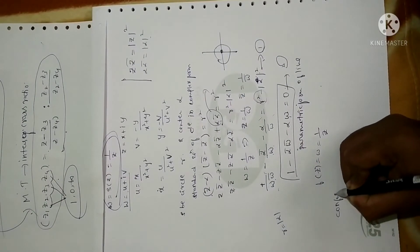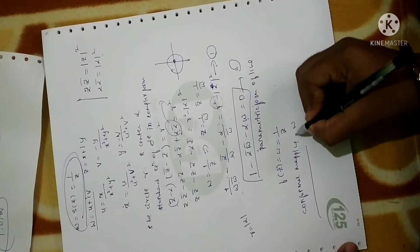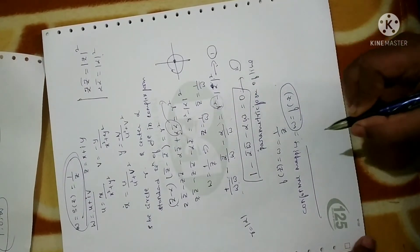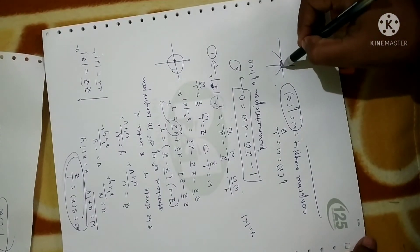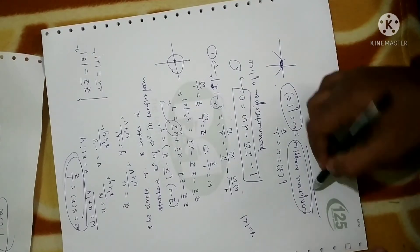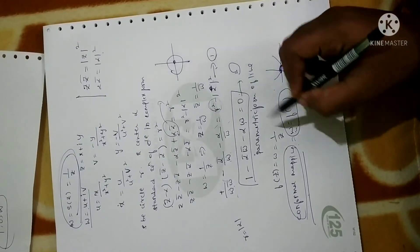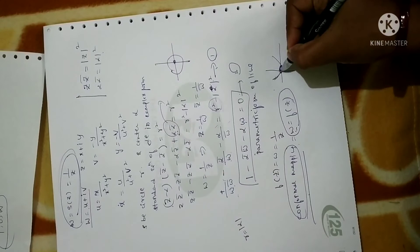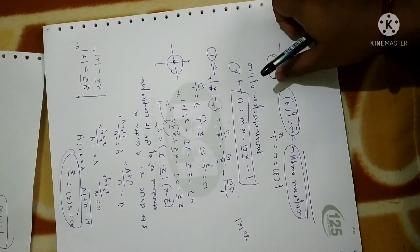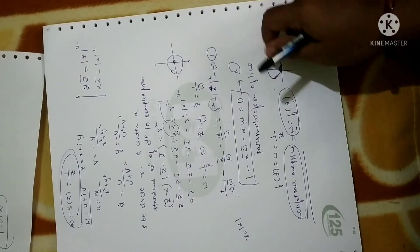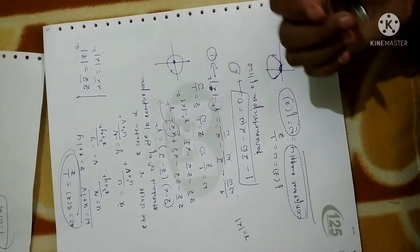One more concept is conformal mapping - this is also not in your syllabus but they have asked this. A transformation w = f(z) is said to be conformal mapping if it preserves angles between oriented curves. If you rotate any curve in a complex plane, the angle should not be changed. A transformation w = f(z) is conformal if it preserves angles between oriented curves in magnitude as well as in orientation - there should not be any change in length as well as orientation.